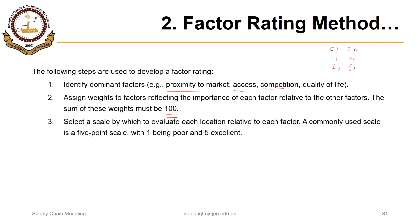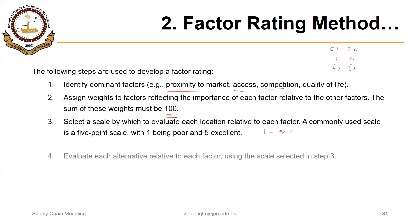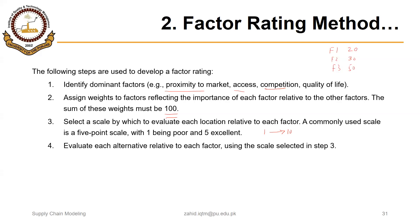Step three: select a scale by which to evaluate each location relative to each factor. A commonly used scale is a five-point scale, with one being poor or worst and five being excellent, but it could also be a scale ranging from one to ten. Step four: evaluate each alternative relative to each other using the selected scale.